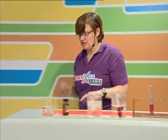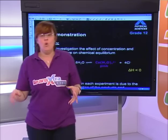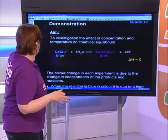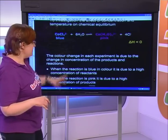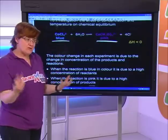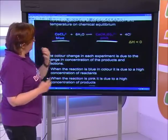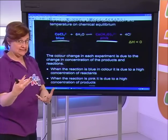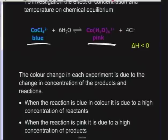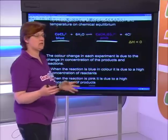Let's go back to the board, because we need to talk about what was happening and why. When the reaction is blue in color, it means I have a lot of reactants — lots of CoCl₄²⁻. When it's pink, it means I have lots of Co(H₂O)₆²⁺ product. When I describe what's happening: if I have lots of blue, I'm favoring the reverse reaction. If it goes pink, I'm favoring the forward reaction.